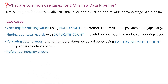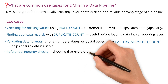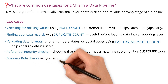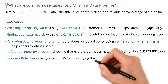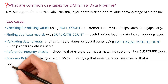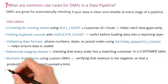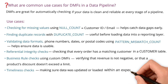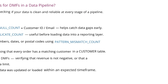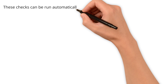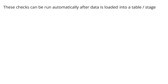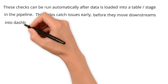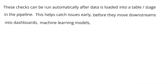Other use cases include referential integrity checks — for example, checking that every order has a matching customer in a customer table. Business rule checks using custom DMFs, like verifying that revenue is not negative or that a product's discount does not exceed a limit. And timeliness checks — making sure data was updated or loaded within an expected timeframe. These checks can be run automatically after data is loaded, helping catch issues before they move downstream into dashboards, machine learning models, or finance reports.